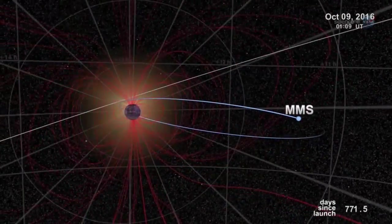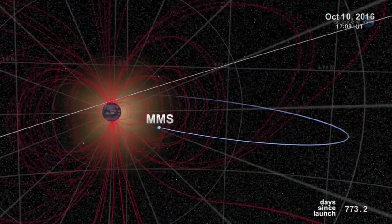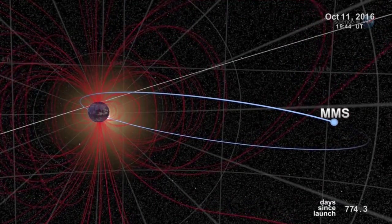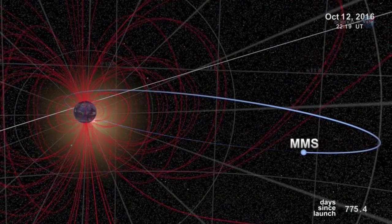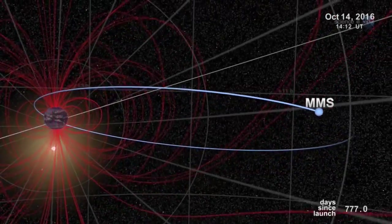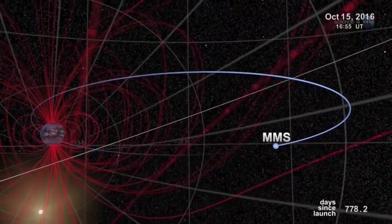Just one problem. Finding them. Magnetic portals are invisible, unstable, and elusive. They open and close without warning. And there are no signposts to guide us in, notes Scudder.